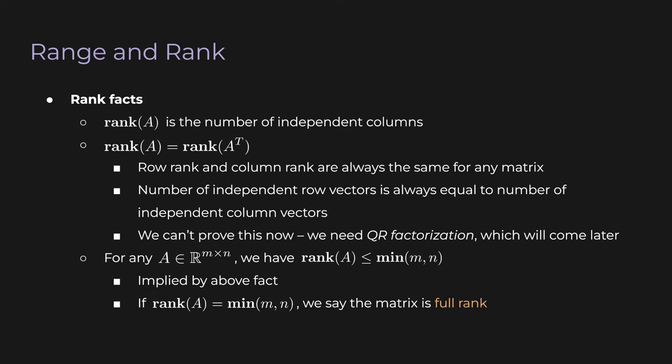For example, if we have a skinny matrix, we know N is less than M, so a full rank skinny matrix must have rank N. If we have a fat matrix, we know M is less than N, so a full rank fat matrix must have rank M. And of course, a full rank N×N square matrix has rank N. Full rank is an important property because it basically says the output space of a full rank matrix is as big as it could possibly be.